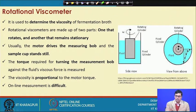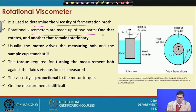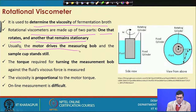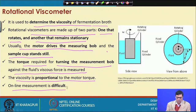The rotational viscometer is used for measuring the viscosity of a fluid — the Brookfield viscometer is largely used for determining the viscosity of fermentation broth. A rotational viscometer is made of two parts: one that rotates and another that remains stationary. Usually the motor drives the measuring bob while the sample cup stands still. The torque required for turning the measuring bob against the viscous fluid is measured, and viscosity is proportional to the motor torque. Online measurement is difficult.